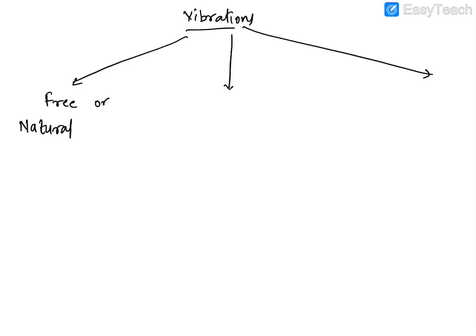Every object has its own distinct natural or free vibration. The second type is called damped vibration. Natural or free vibrations are those expected to go on forever — the amplitude remains constant. But if you oscillate a pendulum, it stops after some time because of air resistance, which causes the amplitude to keep decreasing.